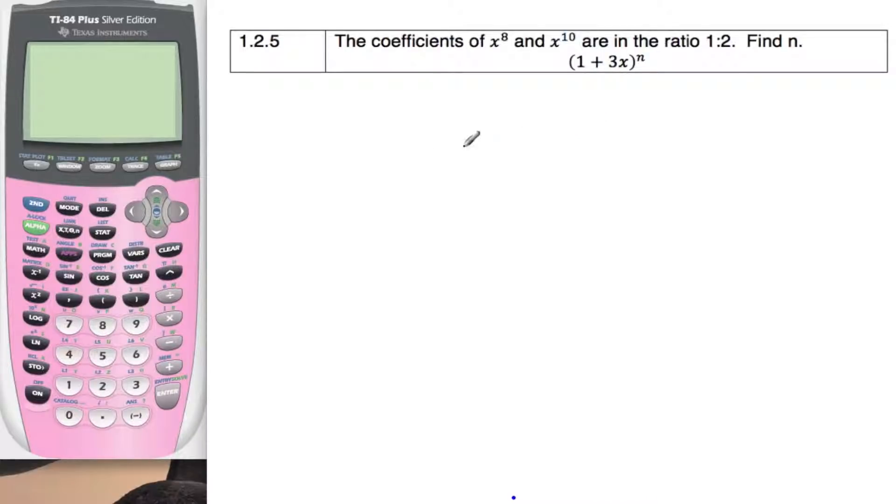So here's the binomial, 1 plus 3x to the n. So let's just start. 2 times the coefficient of x to the 8th. Well, the coefficient of x to the 8th is n choose 8, 3x to the 8th.